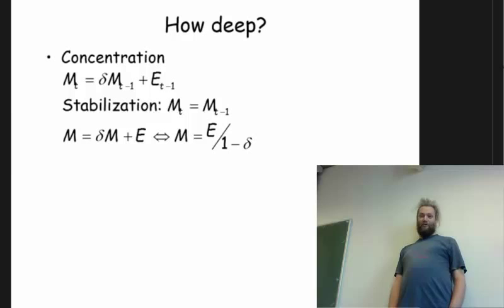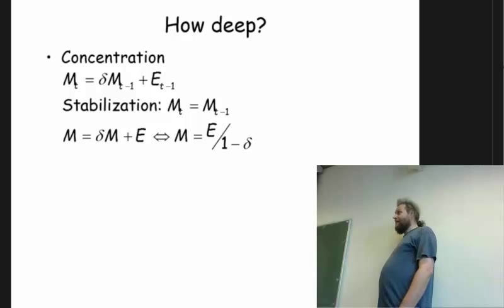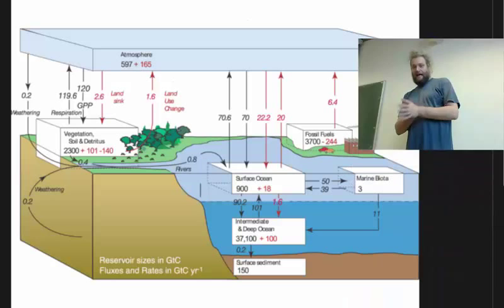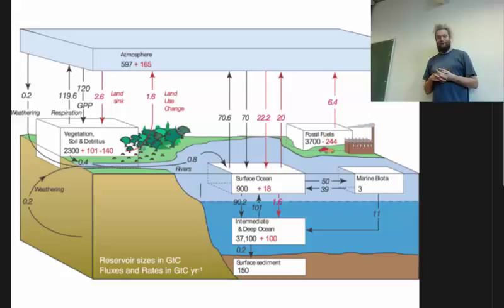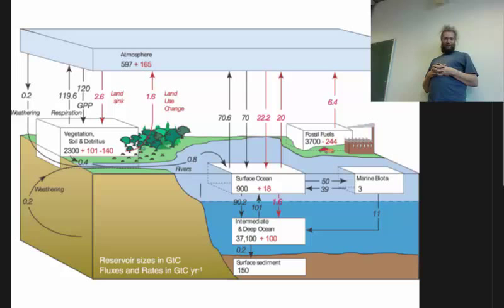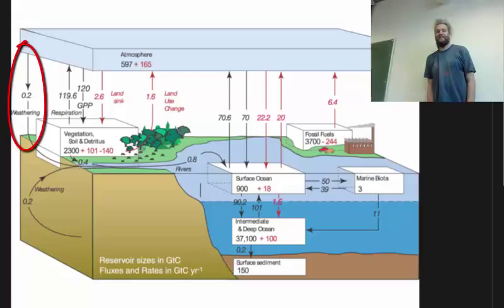That follows from the way the carbon cycle actually works. I've shown you this cartoon before — we were looking at the stocks and flows of CO2. We have different stocks in different reservoirs: the ocean, the deep ocean, the sediments, natural vegetation, stocks of fossil fuels, and primarily the amount of CO2 in the atmosphere. I did not talk about the leftmost arrow: every year a tiny amount — about 0.2 gigatons of carbon — is taken up by what is described here as weathering.